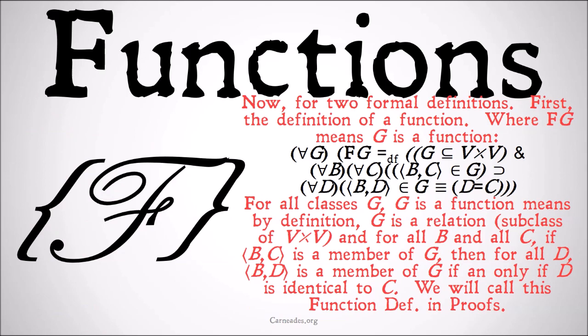Now, for two formal definitions. First, the definition of a function, where F(g) means that g is a function. So for all g, for all classes g, g as a function means by definition that g is a subclass of the universal Cartesian product, or the Cartesian product of the universal class in itself. And for all b and all c, (b,c) is a member of g implies that for all d,